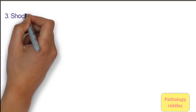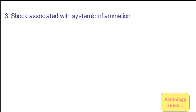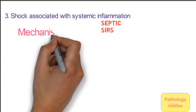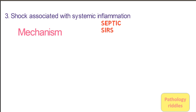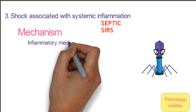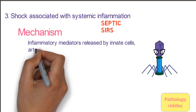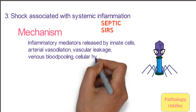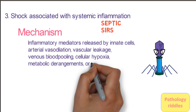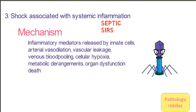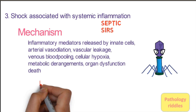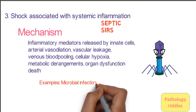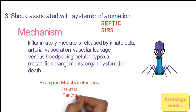The third type of shock is associated with systemic inflammation. It could be due to microbial infection — called septic shock — or due to non-microbial causes, called systemic inflammatory response syndrome or SIRS. When microbes infect the host, innate immune cells recognize them and release inflammatory mediators, resulting in arterial vasodilation, vascular leakage, and venous blood pooling, leading to decreased blood volume, cellular hypoxia, metabolic derangement, organ dysfunction, and potentially death. Causes include microbial infection, trauma, and pancreatitis.